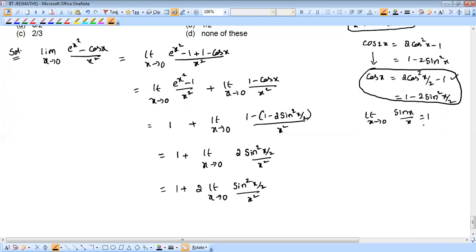Here's sin square x by 2 divided by x square. What I'm trying to say: the sin function is square. Let me say once again: limit x tends to 0, sin function x by 2 whole square, and denominator x square.